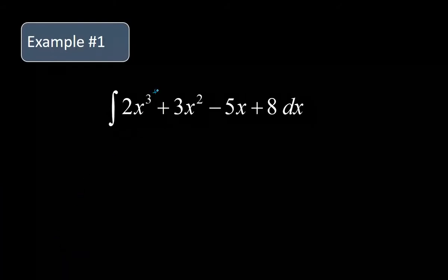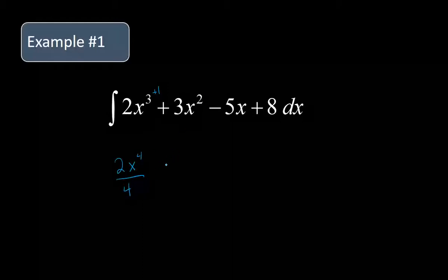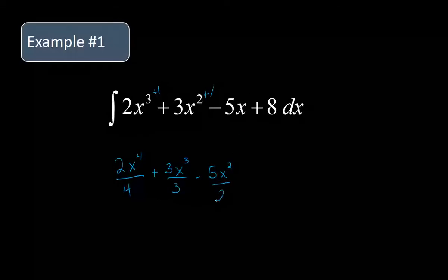So if I add one to the exponent, that's going to be x to the fourth, and then divide by that new power. We'll simplify at the end. Then we're going to go plus 3x — raise the power by one, so that's going to be cubed, divided by the new power — minus 5x, raise the power by one, so one plus one is two, divided by that new power, and then plus eight. Now technically we have 8x to the zero power, because any number to the zero power is going to be one.